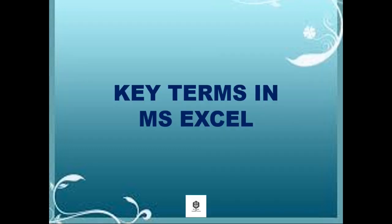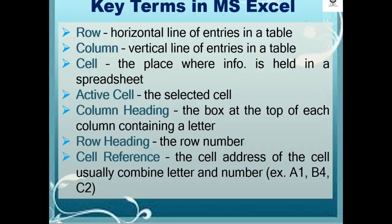There are some key terms in MS Excel. Row: horizontal line of entries in a table. Column: vertical line of entries in a table. Cell: the place where info is held in a spreadsheet.